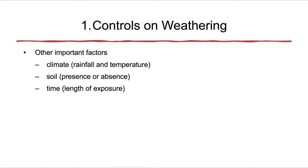Controls on weathering include climate — rainfall and temperature principally. The amount of rainfall determines the amount of reactive fluid that the rock is exposed to. Temperature is simpler: a 10 degree Celsius increase in temperature results in a doubling of the reaction rate. So for every few degrees the temperature increases, rocks dissolve more quickly.